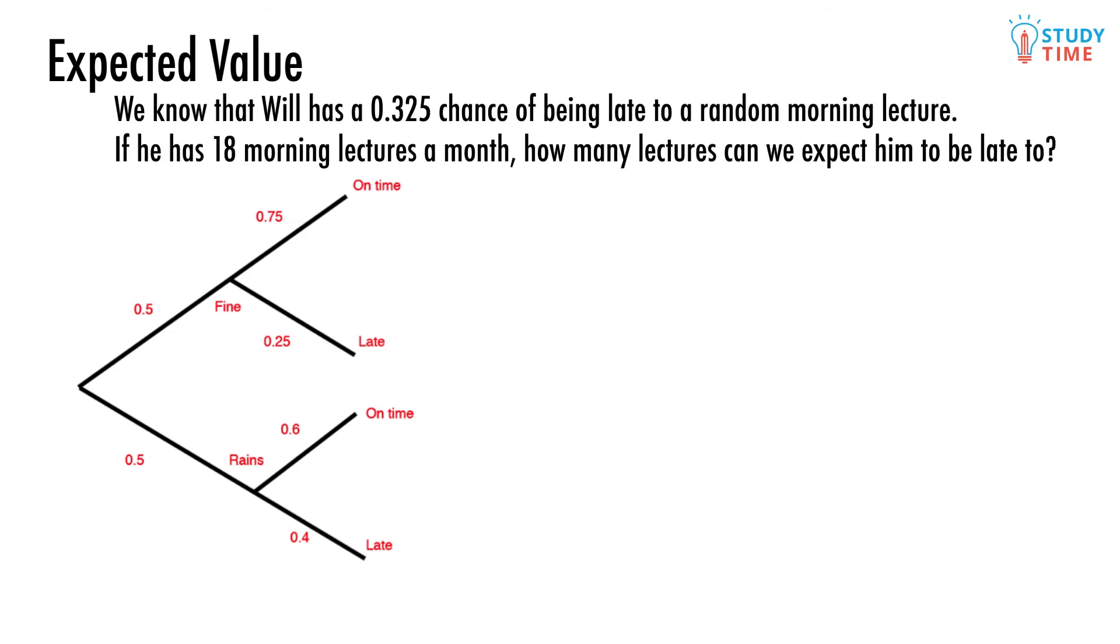Let's say that he's already got 18 morning lectures each month and we've already figured out that he has a 0.325 chance of being late to a random lecture. So the expected value works like this. Number of times late per month equals 0.325 times 18 lectures equals 5.85 lectures. So we'd expect to see Will run in sweaty and bedraggled about 6 times each month.